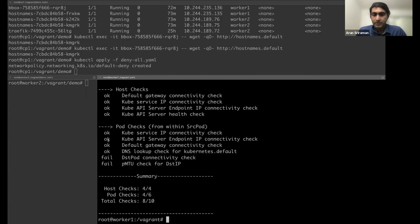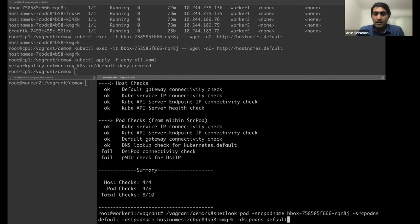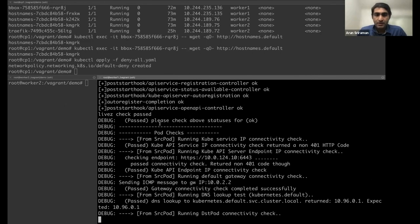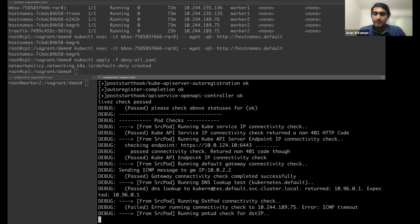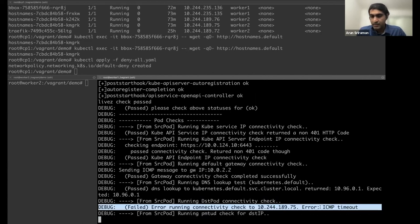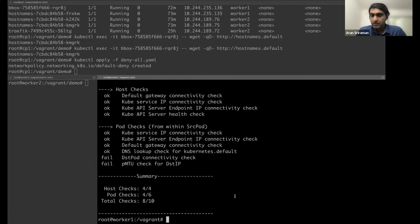And it'll give you a result that says host checks were good, but then it's not able to connect to the destination pod. PMTU is also not working. Let's look at debug information. So what's happening? It's trying to run a destination pod connectivity check, and it failed. It's trying to run PMTU, and it failed. So that's the result that you get.